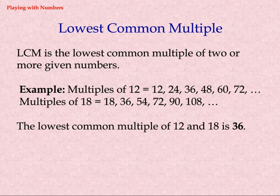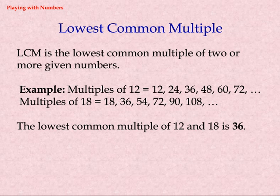Lowest Common Multiple (LCM) is the lowest common multiple of 2 or more given numbers. Example: multiples of 12 are 12, 24, 36, 48, 60, 72, ... Multiples of 18 are 18, 36, 54, 72, 90, 108, ... The lowest common multiple of 12 and 18 is 36.